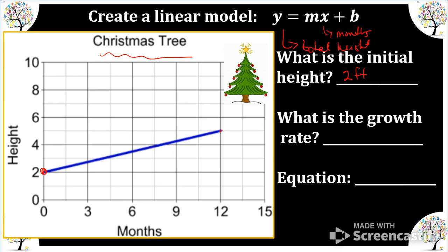So we need to find the slope. So I'm going to pick two nice points that I can easily identify, zero comma two and twelve comma five. So slope is y2 minus y1 over x2 minus x1. We get three over twelve, which simplifies to one-fourth, so that means each month the tree grows one-fourth feet.